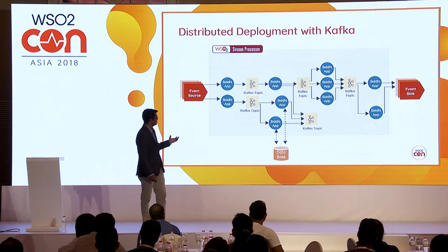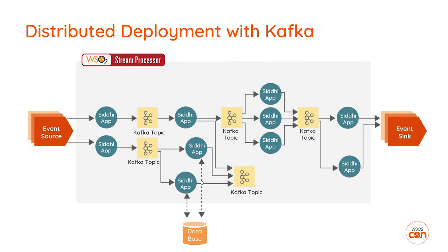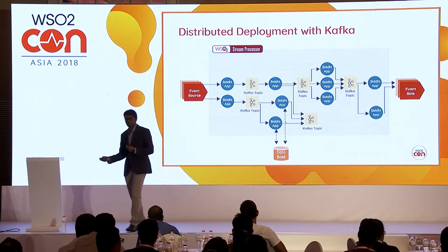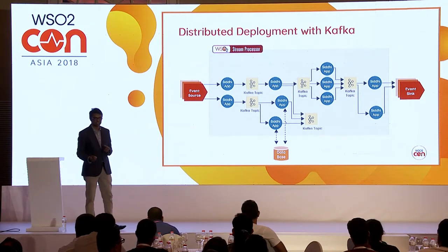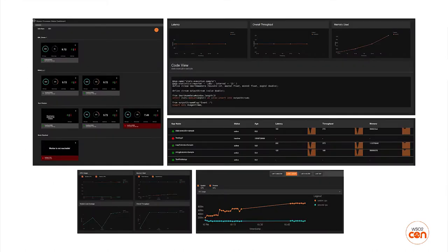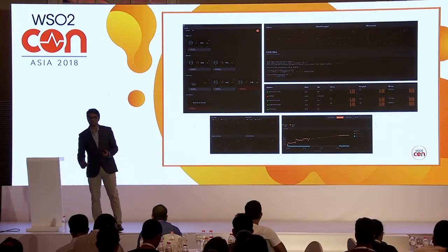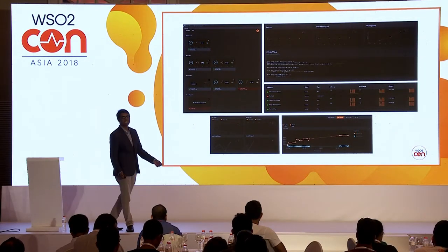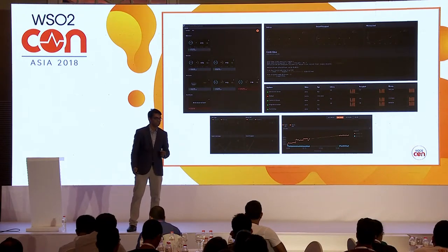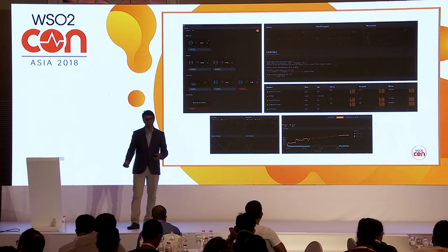In a big system there can be bottlenecks — bad code or a slow database. There should be visibility into the system so you know where performance is good or bad and what the latency issues are. WSO2 provides a status dashboard giving information about the whole node's performance, how many Siddhi apps are deployed, how each app is performing, and how each query is performing — so you can drill down to a very detailed level to understand bottlenecks and tune your system accordingly.